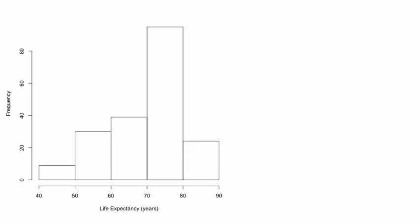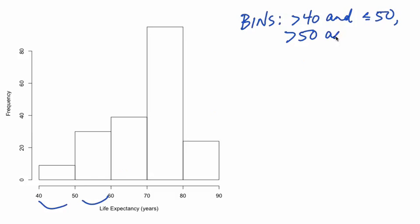Let's start with a histogram of life expectancy for the 197 countries and territories for which a 2011 value of life expectancy was available. The first step in constructing a histogram is to divide the data values into intervals or bins that are mutually exclusive, so that they don't overlap, and exhaustive, so that we don't miss any of the data. Bins are usually equal in size, but they don't have to be. The life expectancies range from about 48 to 83 years, so we've defined our bins to capture every decade from 40 to 90. The first bin includes countries with life expectancies at least 40 but less than or equal to 50, and so on.